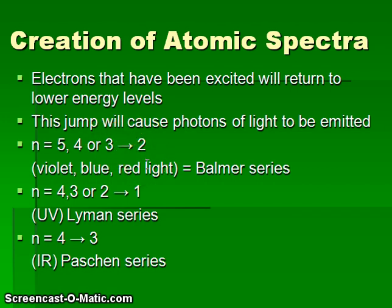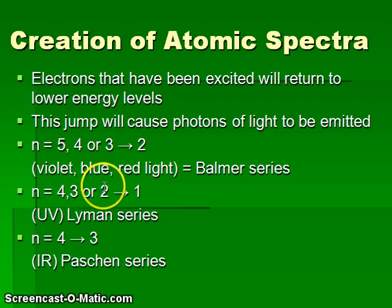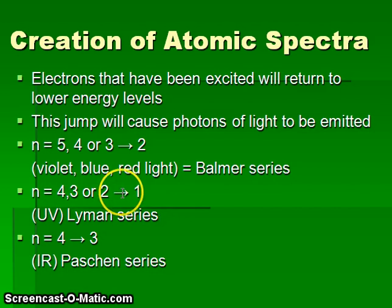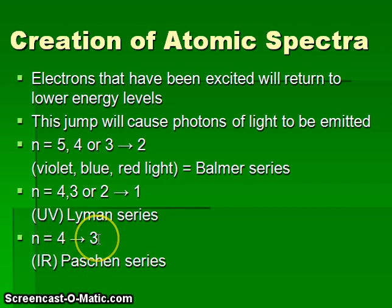There are two other series. The Lyman series produces ultraviolet emissions, including jumps from level four to one, three to one, or two to one. Because all of these jumps produce ultraviolet emissions — which are really high energy — the change in energy between level two and level one is very large. Finally, the Paschen series involves an electron jumping from energy level four down to energy level three. This is a very small jump, producing electromagnetic radiation in the infrared range.